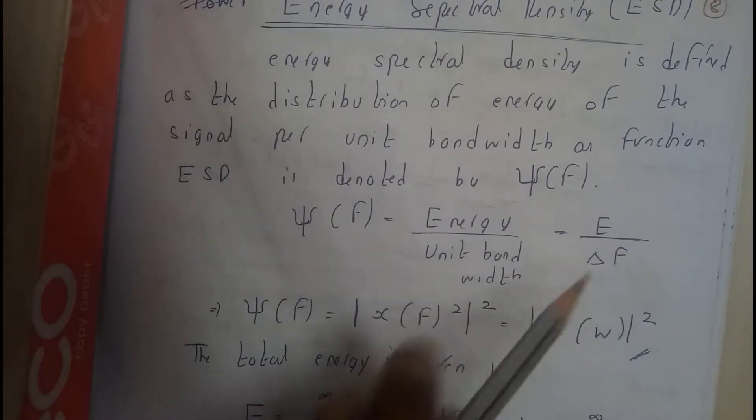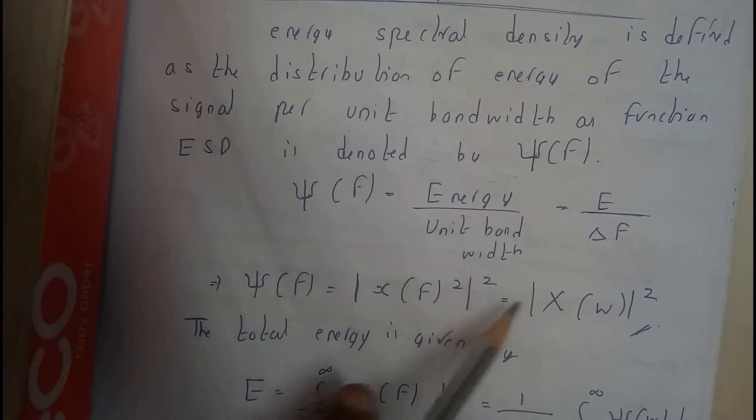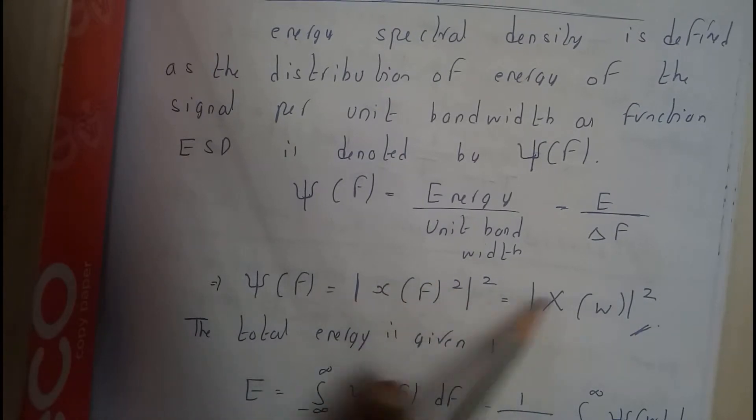That is equal to E by delta F, which is indirectly equal to X of F whole square. So this is nothing but X of omega.